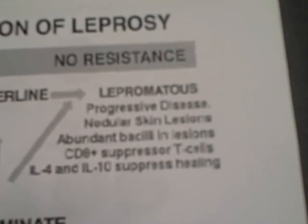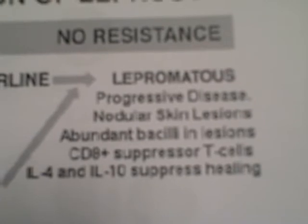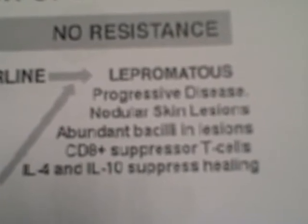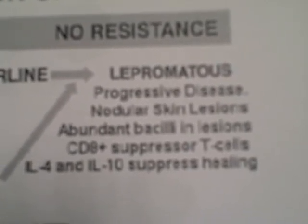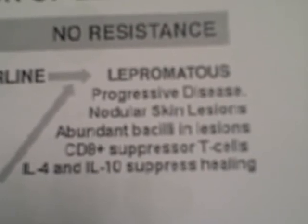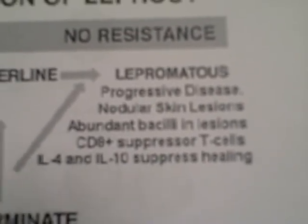In the non-resistant type, lepromatous leprosy is a progressive disease characterized by nodular skin lesions, abundant bacilli in lesions. CD8-plus suppressor T-cells, interleukin-4, and interleukin-10 suppress healing.